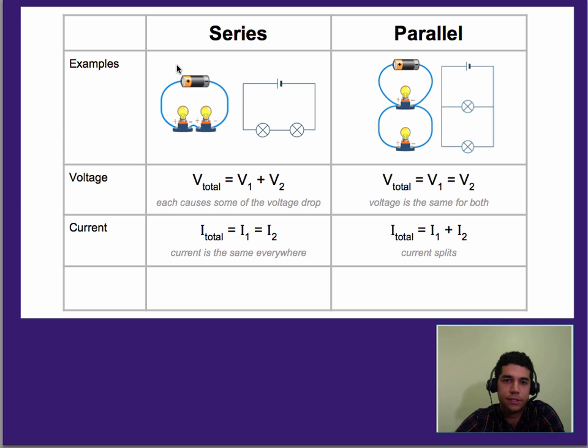Current though, in series, since there's only one path on the way through, each of them gets the same amount of current. In parallel, well, since there are two paths, then that means that the sum of the currents through each of those guys will equal the total, but they're each going to get only a chunk.